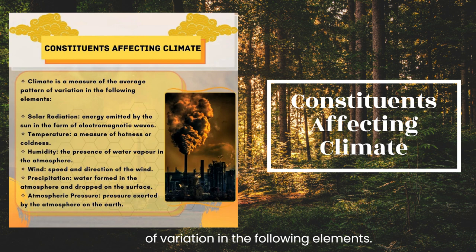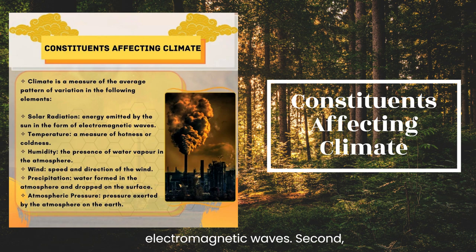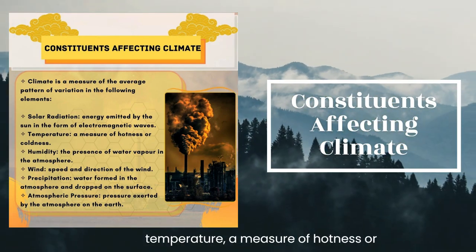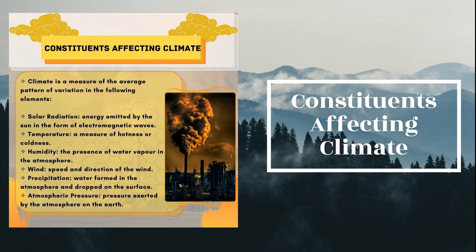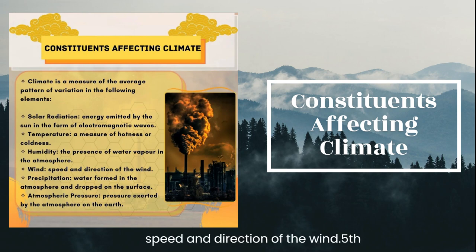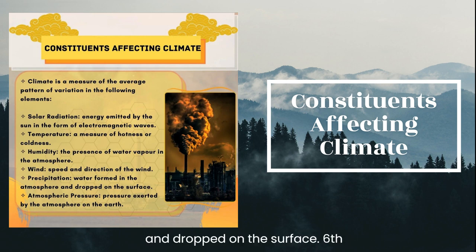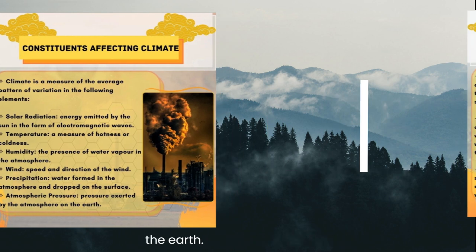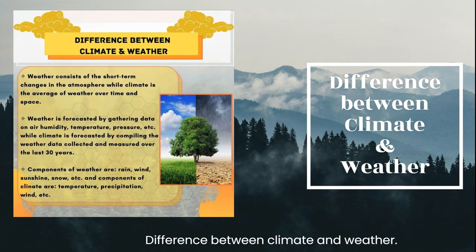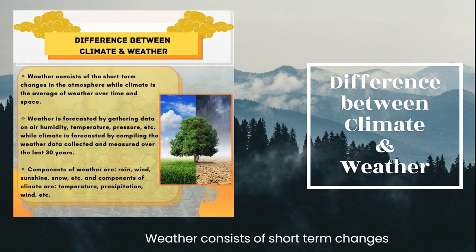Constituents affecting climate: Climate is a measure of average pattern of variation in the following elements — first, solar radiation, energy emitted by the sun in the form of electromagnetic waves; second, temperature, a measure of hotness or coldness; third, humidity, the presence of water vapor in the atmosphere; fourth, wind speed and direction; fifth, precipitation, water formed in the atmosphere and dropped on the surface; sixth, atmospheric pressure, the pressure exerted by the atmosphere on the earth.